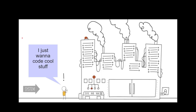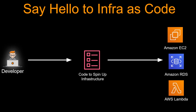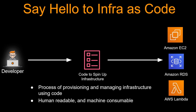So at this point, the developer was probably saying, I just want to code cool stuff. So say hello to infrastructure as code. Instead of the developer going to the management console and spinning all this infrastructure manually, he or she writes some code to provision the infrastructure. So this code will look something like: spin one EC2 with this configuration, spin one Amazon RDS with this kind of parameters and configuration, and spin AWS Lambda with this much memory, this much timeout, and this is the code. That's how infrastructure as code was born — it is a process of provisioning and managing infrastructure using code.